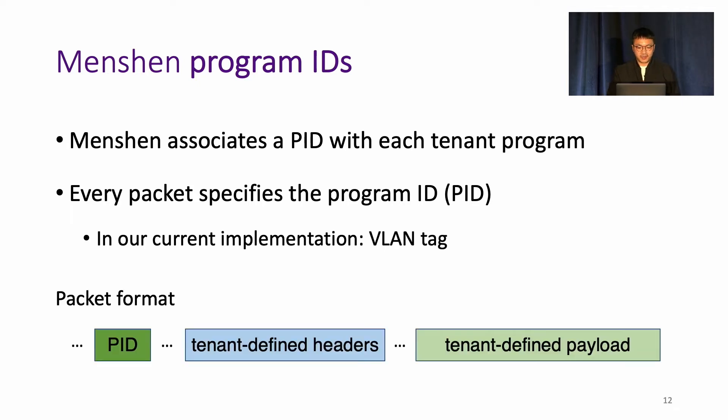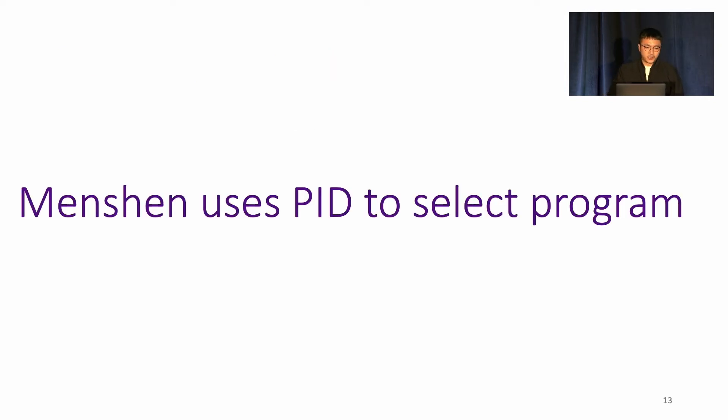So basically for the packet format, Menshen only assumes that each packet will carry this PID. Specifically, we fix the packet format as the PID followed by the tenant-defined headers and the tenant-defined payload. Packets in the wrong format can be sent to the control plane for processing. Menshen then uses this PID to select program.